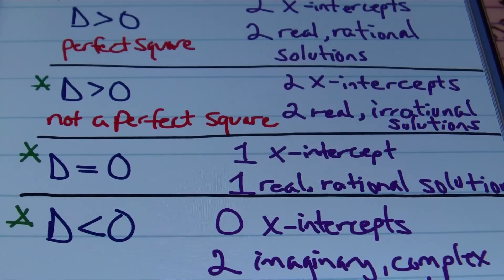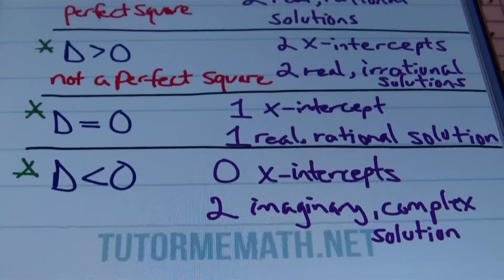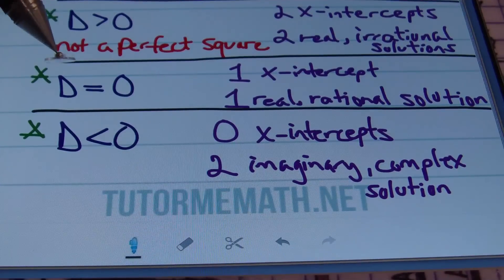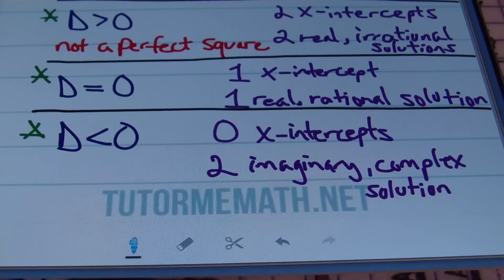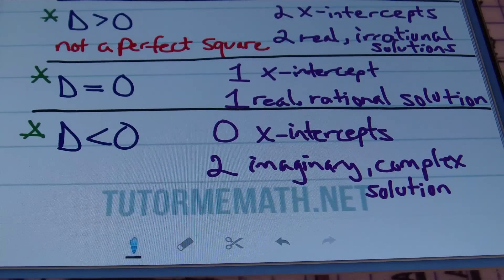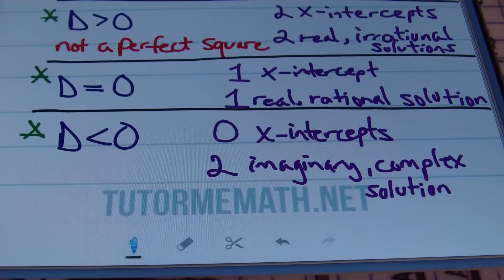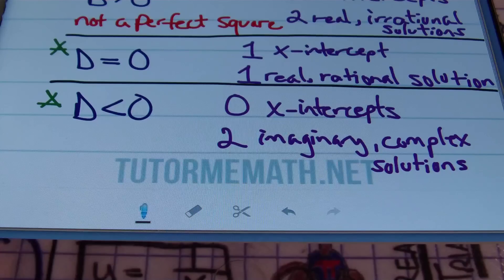If your discriminant value is equal to zero, you'll end up with one real rational solution — just one answer. On the graph you'll see only one x-intercept. And if your discriminant value is less than zero, you'll end up with zero x-intercepts.